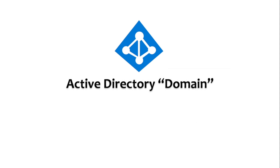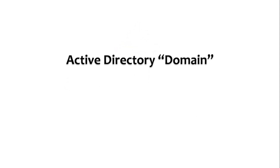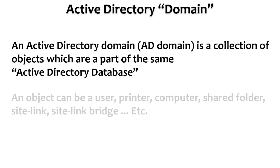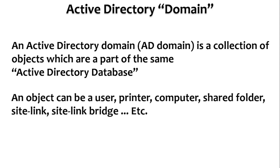An active directory domain is a collection of objects which are part of the same active directory database. An object can be a user, printer, computer, shared folder, site link, site link bridge — anything in active directory is an object. The objects which share the same database are called a domain.